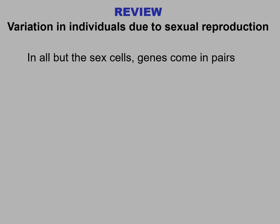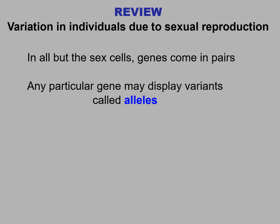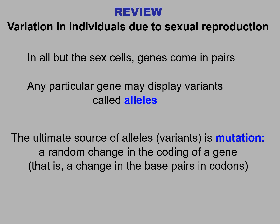Let's begin with reviewing how variation in individuals is due to sexual reproduction. In all but the sex cells, genes come in pairs. Any particular gene may display variants called alleles. The ultimate source of alleles is mutation, a random change in the coding of a gene — that is, a change in the base pairs in the codon.